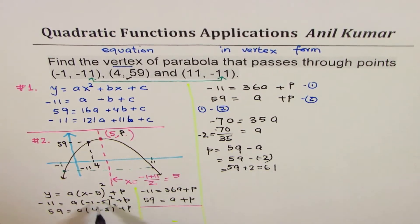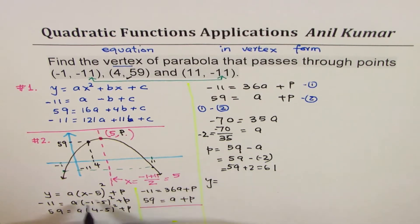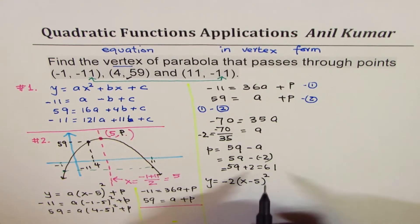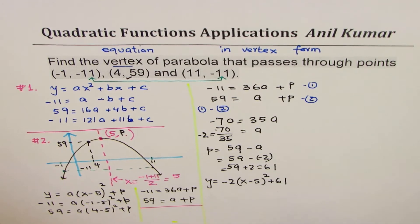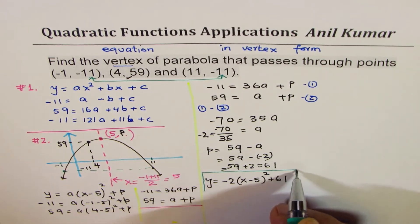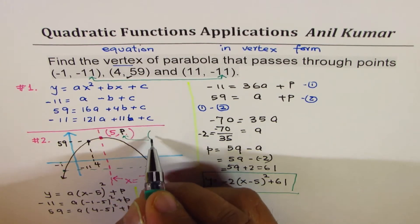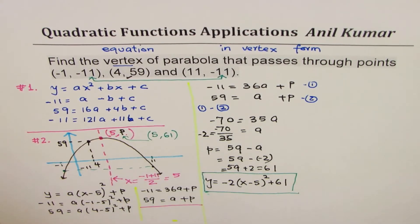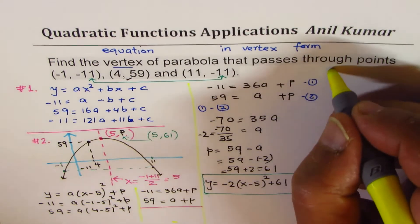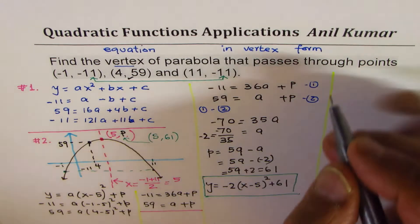Now that we know a = -2 and p = 61, we can write the equation as y = -2(x - 5)² + 61. This is the equation in vertex form, and therefore the vertex is at (5, 61). That's the second method — probably the method you'd use for this particular solution. However, I'll also teach you the third method.